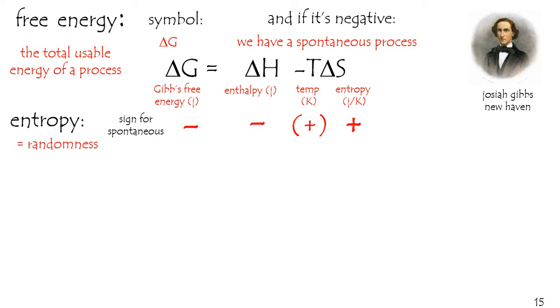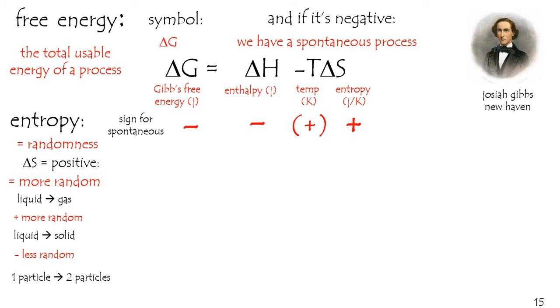Entropy in a word is randomness. When things are getting more random, the entropy is increasing, and it's positive. Let's do a couple examples. If we turn a liquid into a gas, it gets more random. Positive. If we turn a liquid into a solid, it gets more organized. Negative. One particle breaks into two. More random. Positive. Entropy is really easy to analyze qualitatively like that.